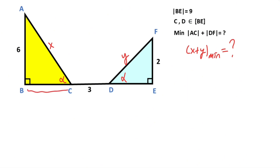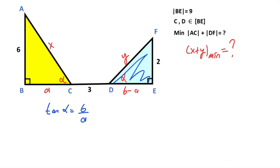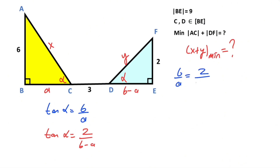I want to represent this side length as a, so here must be equal to 6 minus a. If you focus on this triangle, tangent alpha equals 6 over a. Likewise for the other triangle, tangent alpha equals 2 over (6 minus a). Therefore if we equalize these two equations, 6 over a must equal 2 over (6 minus a).